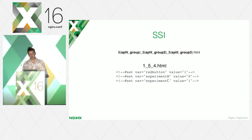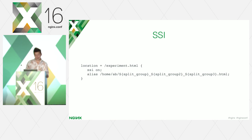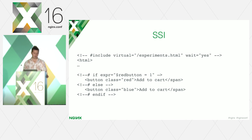With variables containing groups corresponding to the visitor, you can generate a file with the description of the experimentation involved. For the file name we simply use the concatenation of group variables. Inside each file we set the SSI variables corresponding to the experiments for the visitor. Next we need to describe the location that points to our generated files — as you can see from the slide, we simply substitute variables in the alias directive. Then we include this location within our web pages, so by including the file in a page the variables will be available for use in our templates.